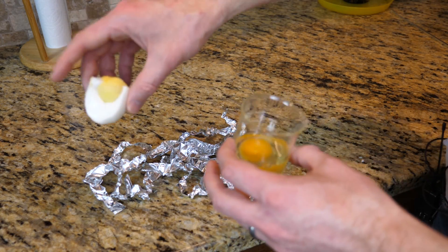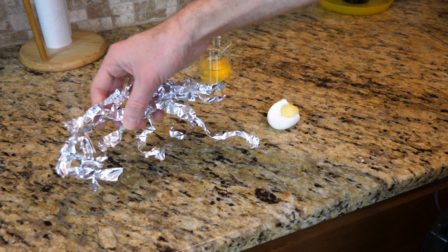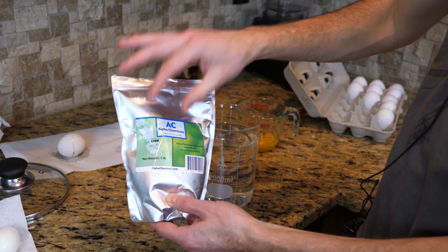So my goal now is if I want to turn this back into a liquid egg, I have to somehow untangle all these proteins. So it turns out there's a pretty good chemical for doing that. And that chemical is called urea.